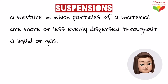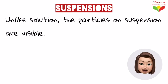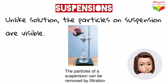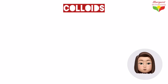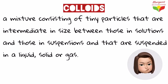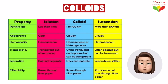Besides solutions, we have other types of mixtures. Suspension is a mixture in which particles of a material are more or less evenly dispersed throughout a liquid or gas. Unlike solutions, you can easily see the particles in a suspension, and by passing the liquid or gas through a filter, the solid particles can be trapped and separated. Another type of mixture is colloid — colloids have properties between those of a solution and a suspension. A colloid consists of tiny particles intermediate in size between those in a solution and those in a suspension, suspended in a liquid, solid, or gas.